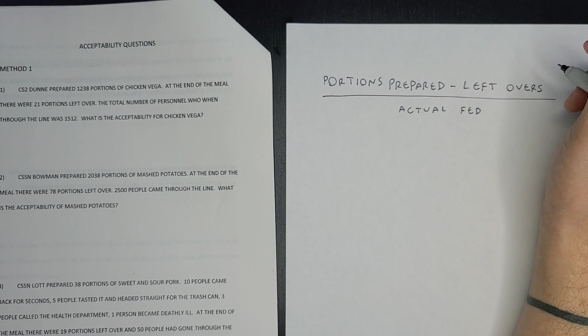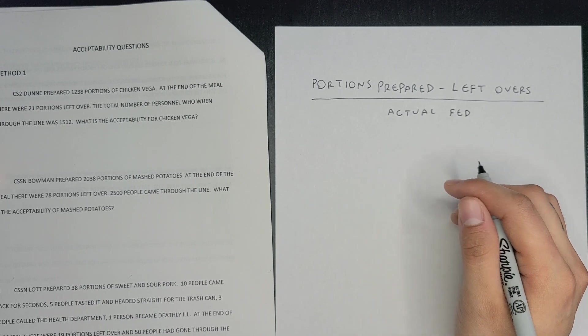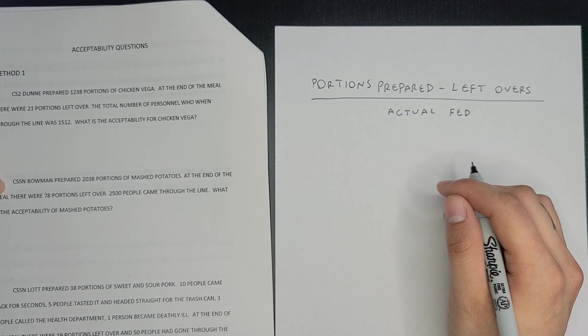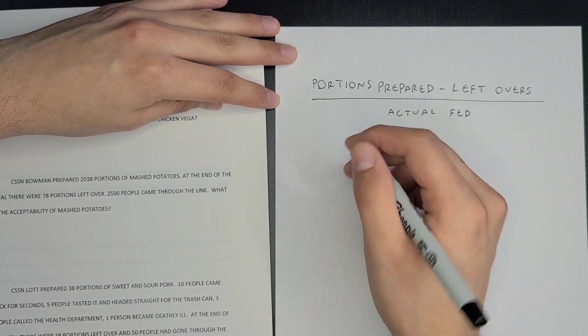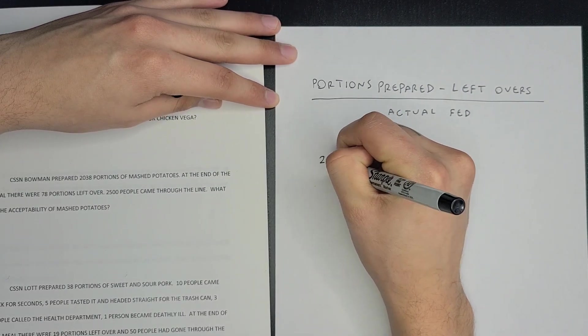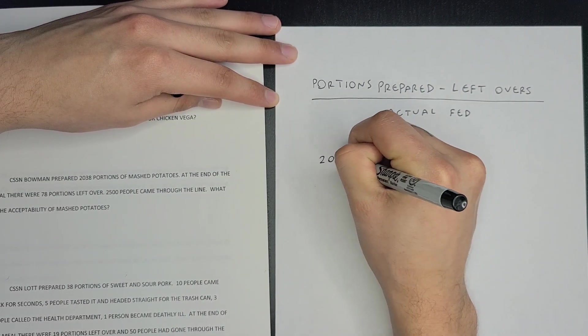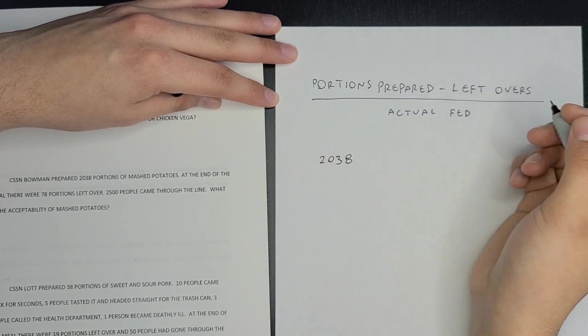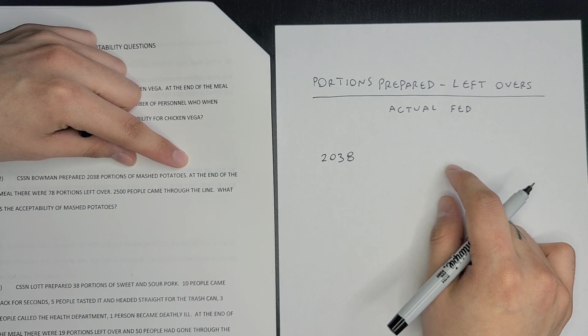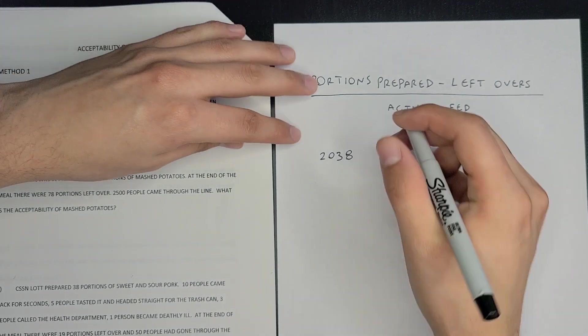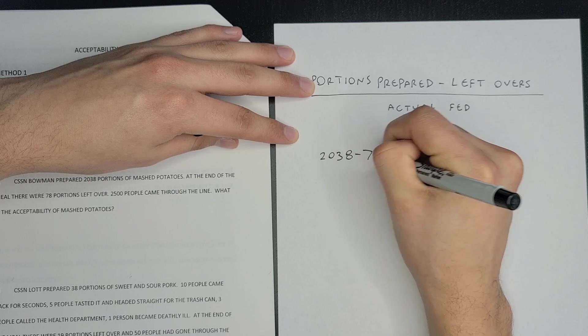when food prepared does not run out. In this case, the problem says CSM Bauman prepared 2038 portions of mashed potatoes—those are your portions prepared. At the end of the meal, there were 78 portions left over, so minus 78.